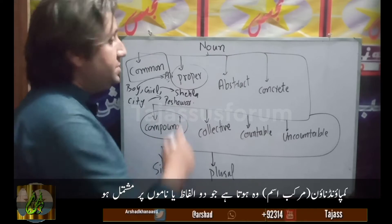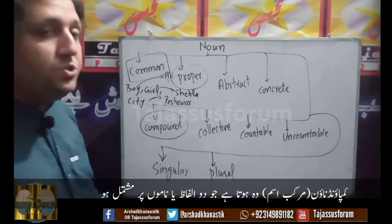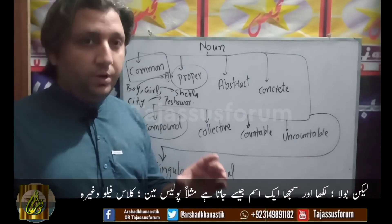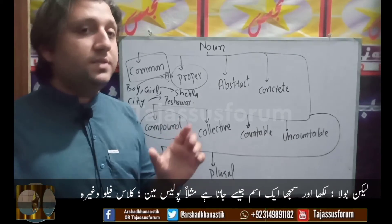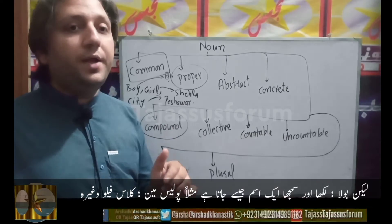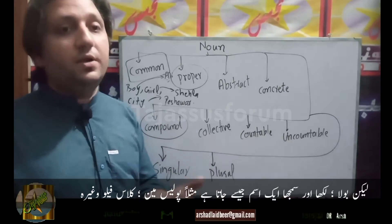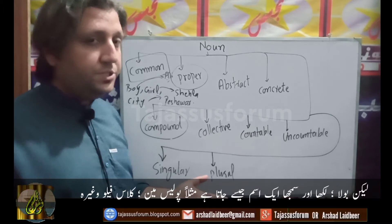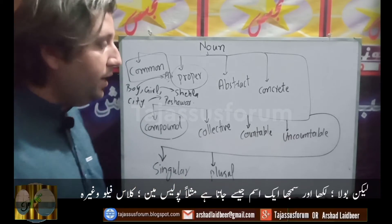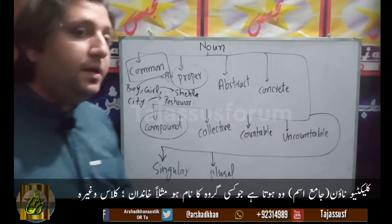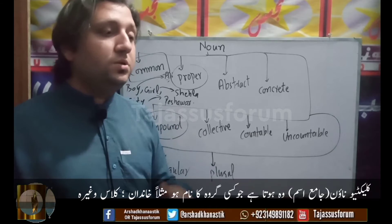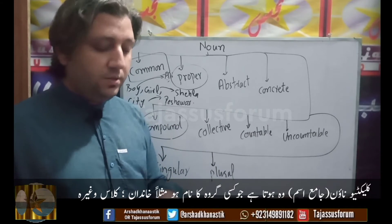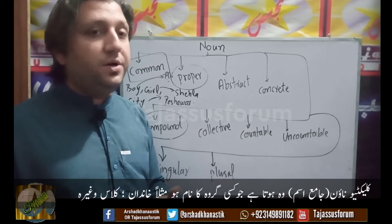Coming towards compound noun — compound noun is actually a noun that is composed of two words, but is written and used as a single word. For example: policeman, class fellow, etc. Collective noun is the noun which refers to a group. For example: family, class, etc.